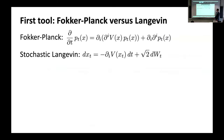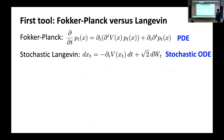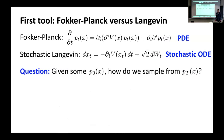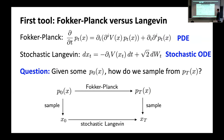There's a generalization of this idea to a more general set of equations — namely the Fokker-Planck equations. The Fokker-Planck equations have this function v(x), and if I replace v(x) with 0, we've covered the case of the heat equation. The stochastic Langevin equation also has this v appearing in it. This is a PDE, and this is a stochastic ODE. Given some P_0(x), how do we sample from P_t(x)? It's designed to have the same answer: the Fokker-Planck equation bears the same relation to the stochastic Langevin, and if we want to sample from time-t Fokker-Planck, we sample from the initial distribution and evolve according to the appropriate stochastic Langevin to get the suitable sample in distribution.